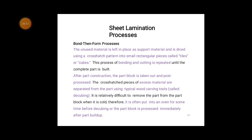The unused material is left in place as support material and is cross-hatched into small rectangular pieces called tiles or cubes. The process of bonding and cutting is repeated until the complete part is built. After part construction, the part block is taken out and post-processed: the cross-hatched pieces of excess material are separated using wood carving tools called deubbing, to remove the extra material. It is difficult to remove parts from the part block when cold, so it is often put into an oven for some time before removing the parts.